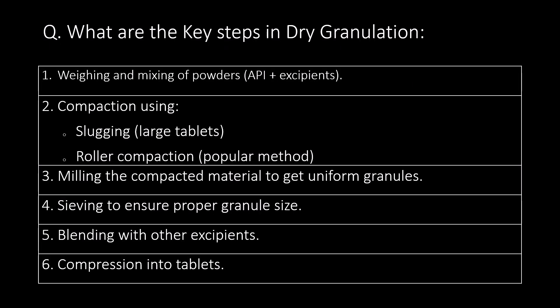What are the key steps in dry granulation? First, weighing and mixing of powders — that is API and excipient. Second, compaction using slugging or roller compaction. Third, milling the compacted material to get uniform granules. Fourth, sieving to ensure proper granule size. Fifth, blending with other excipients. And sixth, compaction into tablets.